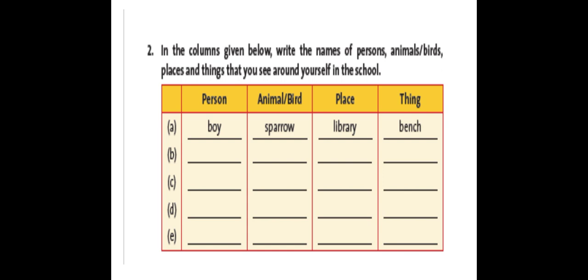So person, in person you will write, the first one is done here: boy. Animal bird, sparrow. Place, library is in school. Thing, bench. Like that you have to write more four things or person, place, animal, things in your school.